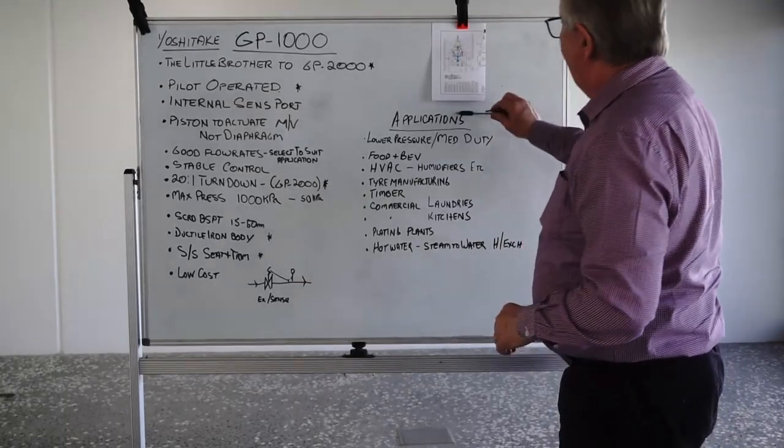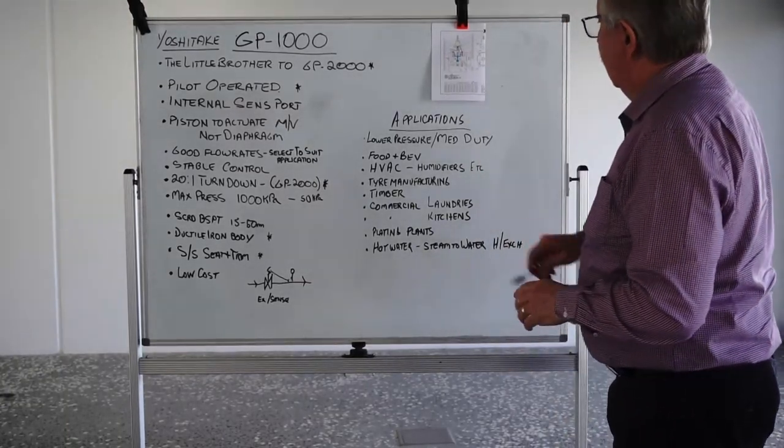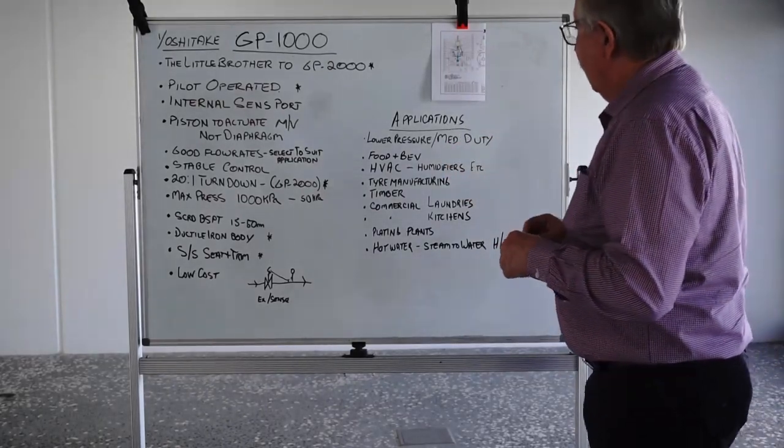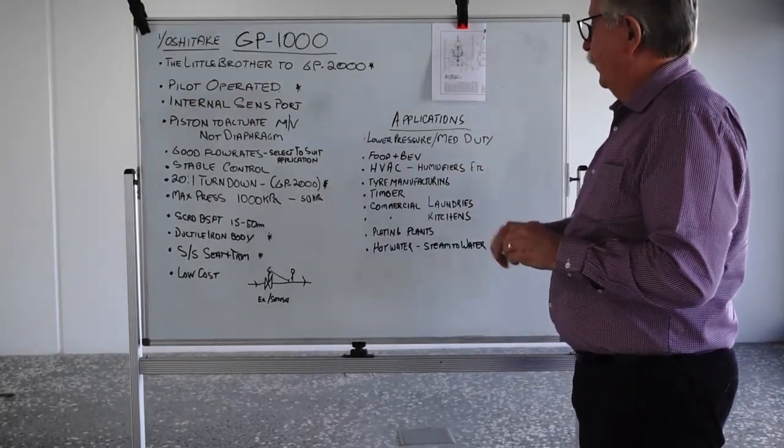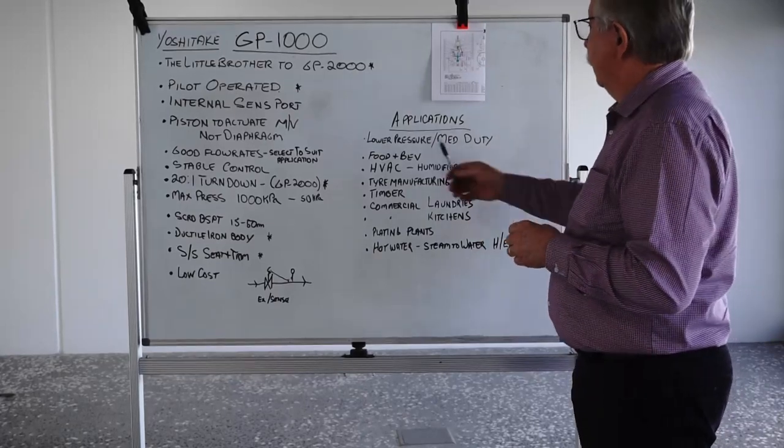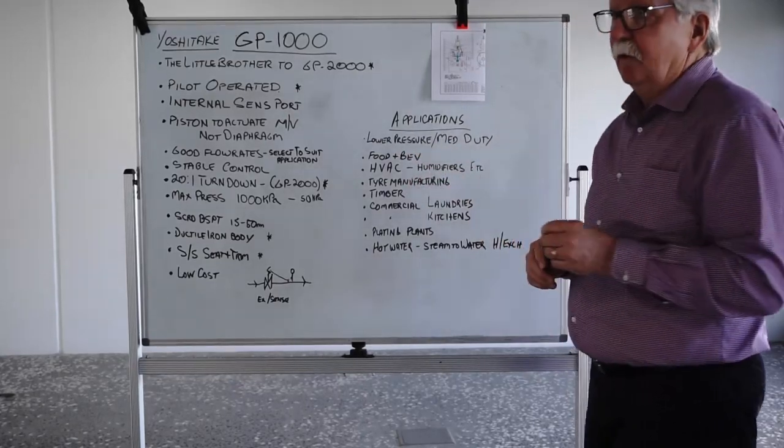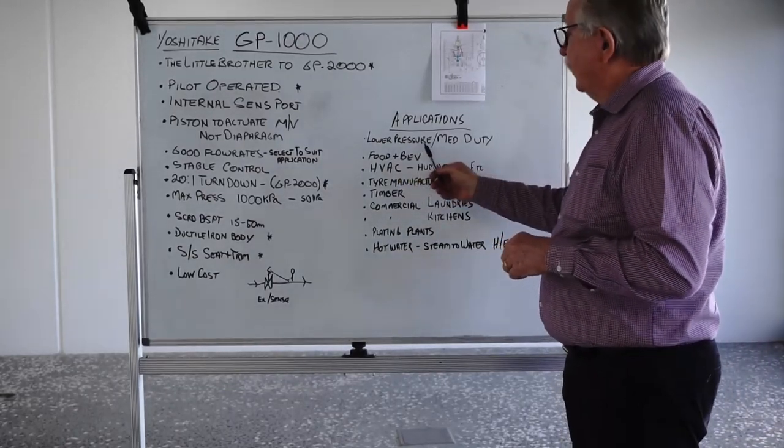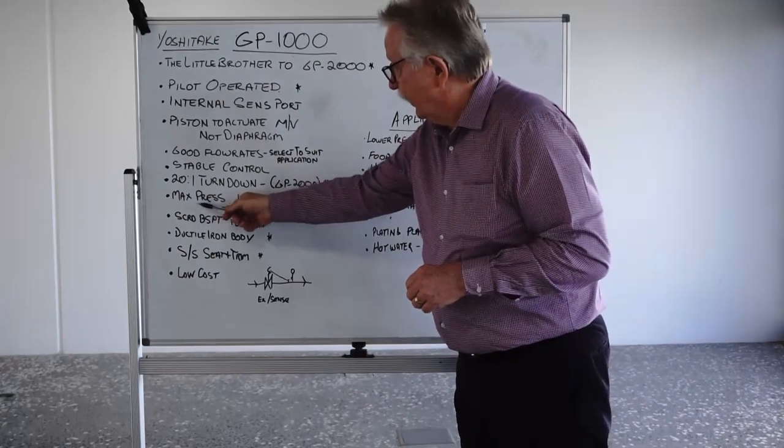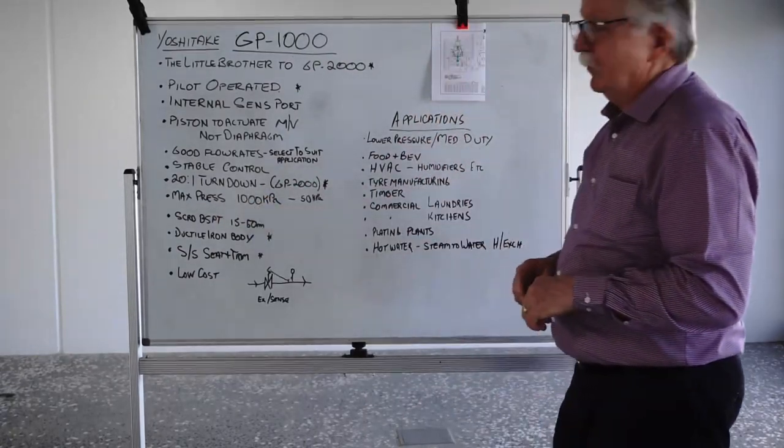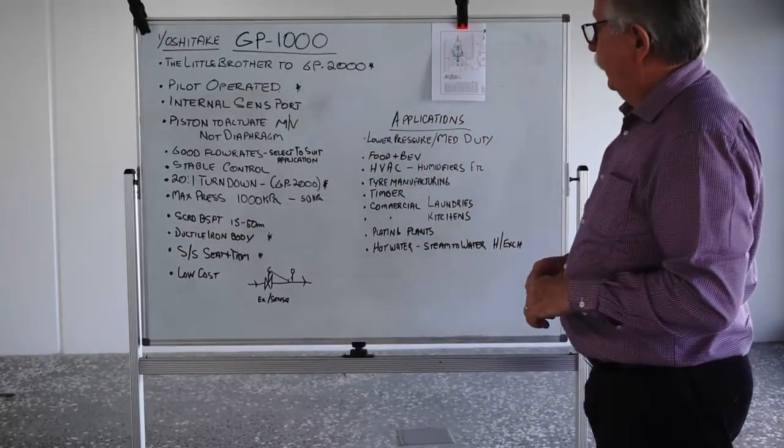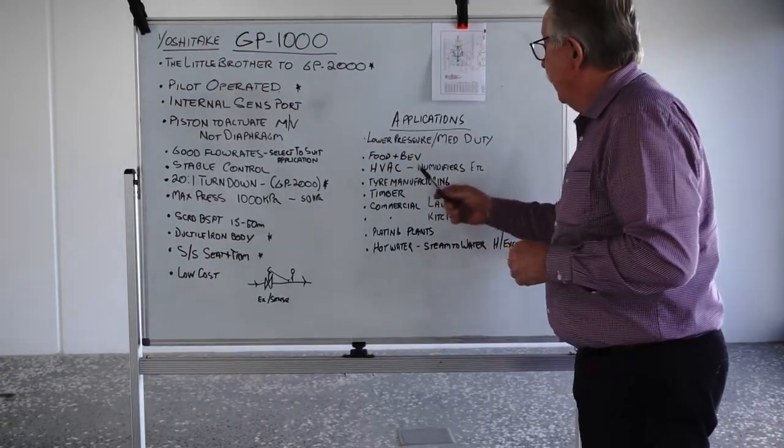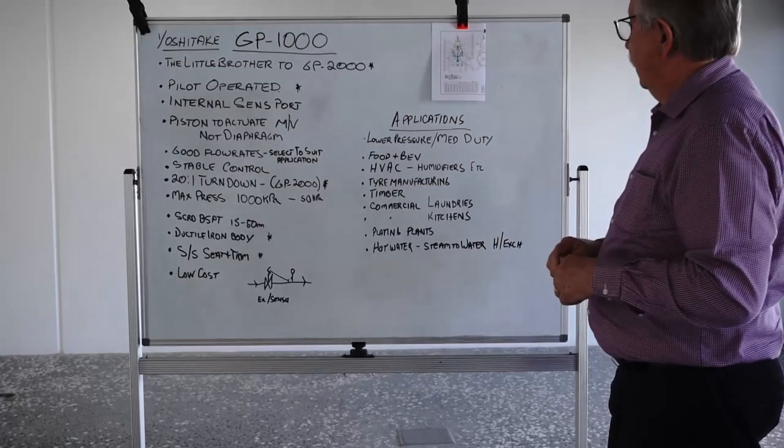With regard to applications, pretty much you can use them anywhere. But I sort of would prefer them from my experience to put this type of valve on a medium duty process, probably where you need lower pressures because it does only have a maximum steam inlet pressure of 1000 kPa. So if you needed something that was going to operate high pressure, it wouldn't be suitable anyway. You'd go for the GP2000.